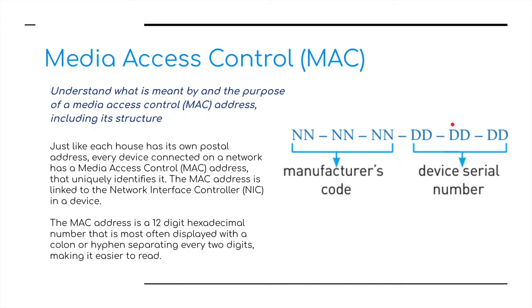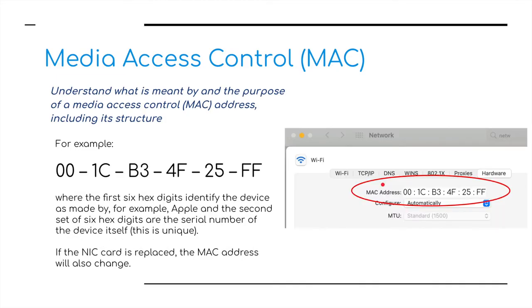Just like each house has its own postal address, every device connected to a network has a media access control address — this uniquely identifies it. The MAC address is linked to the network interface card, so each NIC has its number built into it. The MAC address is 12 digits and these are hexadecimal numbers. On a MacBook, you'd go to System, then Network, click on the Hardware tab, and this is the MAC address — our unique identifier for that particular device.